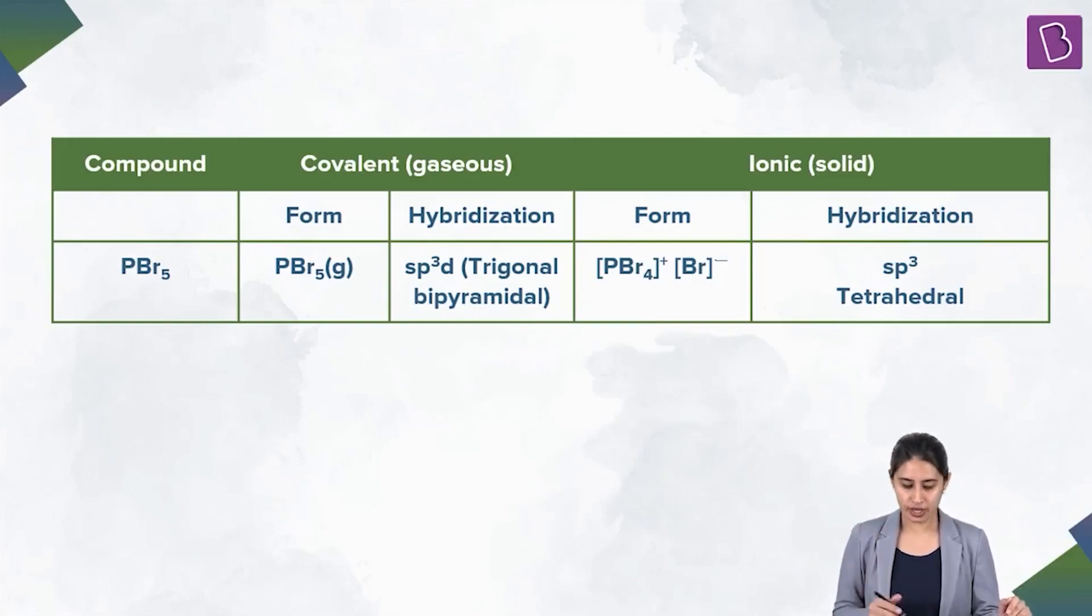Third one, PBR5. PBR5 exists similar to PCL5, TBP in covalent state. In ionic, it exists as PBR4+ and BR-. PBR4+, 5 plus 4 minus 1 by 2 comes out to be 4, SP3, that means tetrahedral geometry.